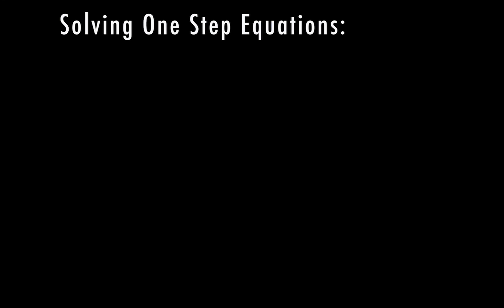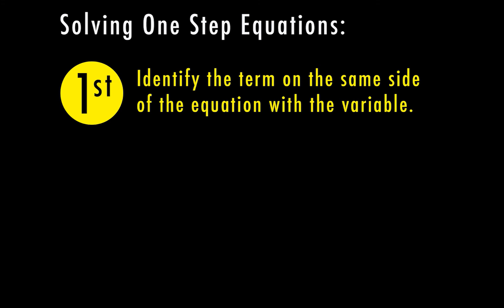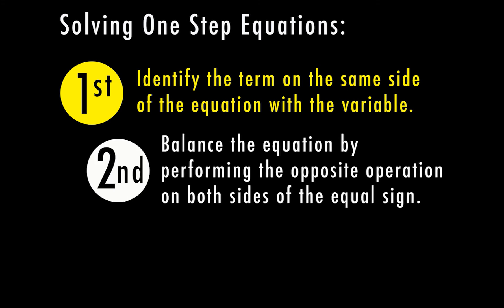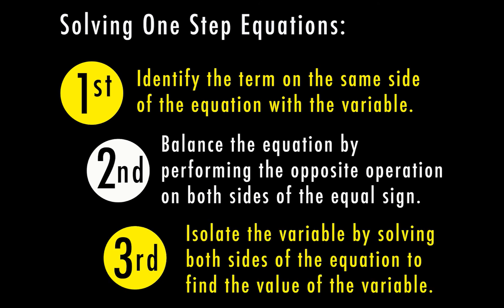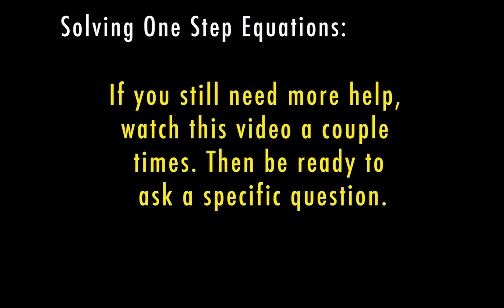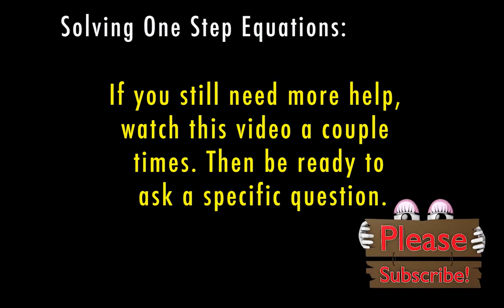Let's recap our steps for one-step equations with multiplying and dividing. First, identify the term on the same side of the equation with the variable. Second, balance the equation by performing the opposite operation on both sides of the equal sign. Third, isolate the variable by solving both sides to find its value. Remember: if the number and variable are multiplying, divide; if they're dividing, multiply. And from the other video — if you're adding, subtract; if subtracting, add. This is just the basics of one-step equations, so watch the video a couple more times if needed, and be ready to ask specific questions if you still have trouble.